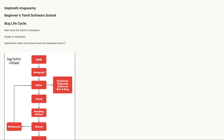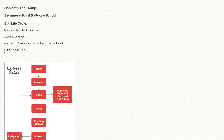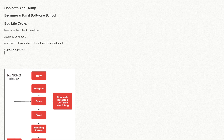The developer reviews the reproduced steps and decides: is this a valid bug, a duplicate, a reject, a defer, or not a bug? Duplicate means it is a repeated bug — for example, if two testers raise the same bug, one will be discarded as a duplicate.